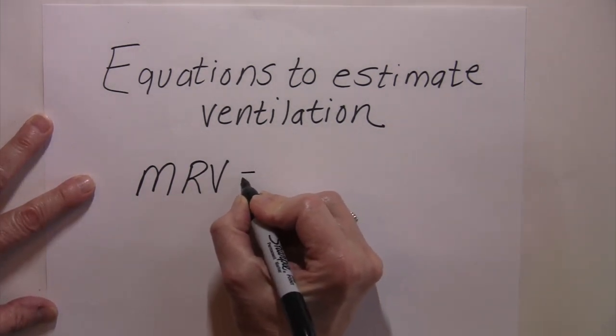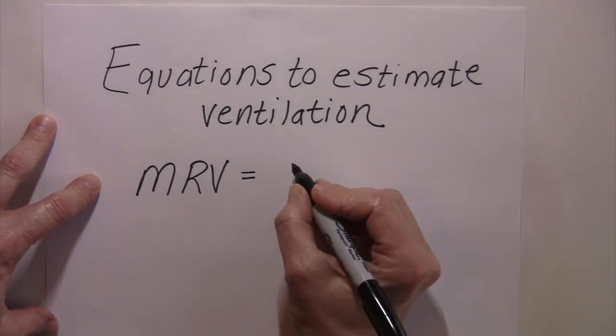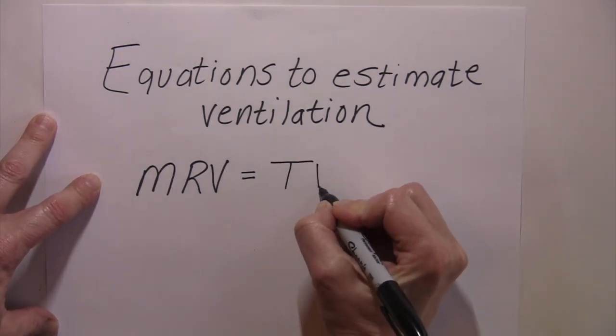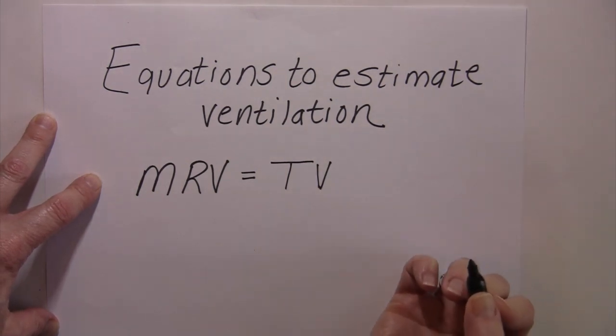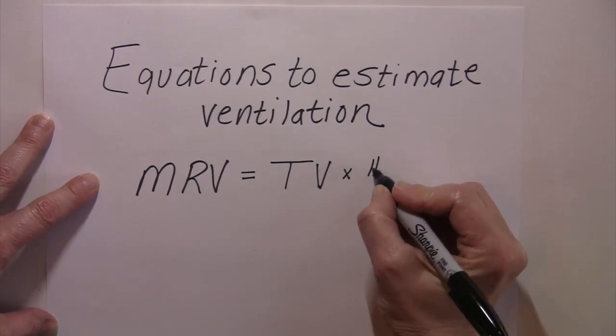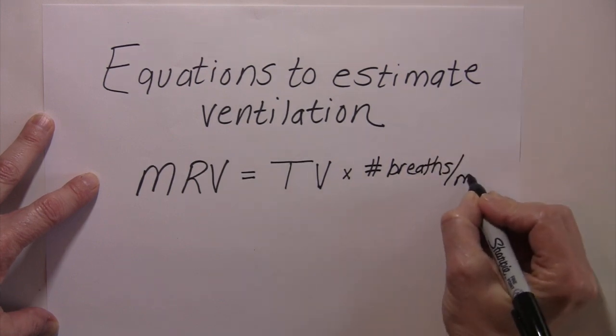So to figure out the minute respiratory volume is pretty straightforward. What we would need to know is how much air do we bring in when we inhale. We know that's called the tidal volume. And then the only other thing that we would need to know is how many breaths are you taking per minute. So we would need to know the frequency of breathing, or the number of breaths per minute.